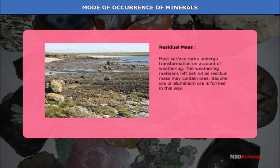Residual mass. Most surface rocks undergo transformation on account of weathering. The weathering materials left behind as residual mass may contain ores. Bauxite ore, or aluminium ore, is formed in this way.